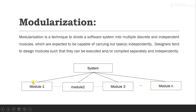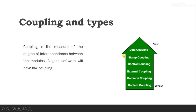For example, consider a module that fails due to some technical issue and cannot perform its task. The failure of this module should not hamper the working of other modules. If two modules are highly interdependent — that is, if the coupling between them is high — then the failure of one module may hamper the working of the other. That is why any software system needs to have low coupling. In total, we have six types of coupling.